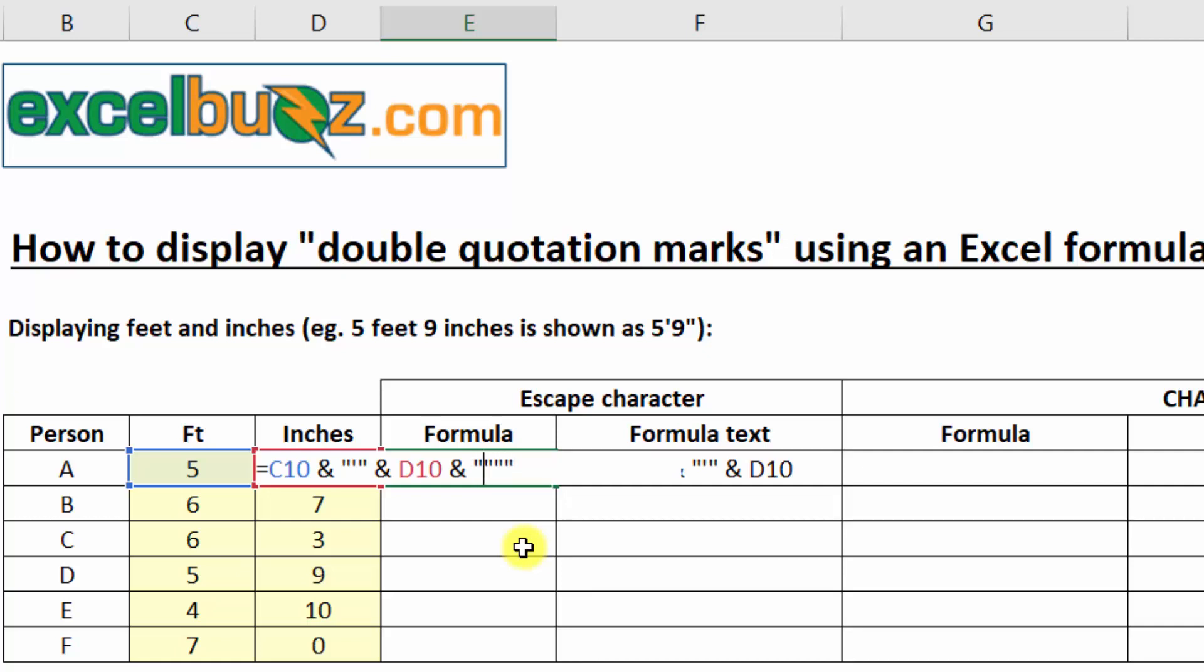The first one starts the string of text. The second one is an escape character. It says if there's another double quotation mark after this one, then we want to display that one. We're not using it to indicate the end of a string of text.